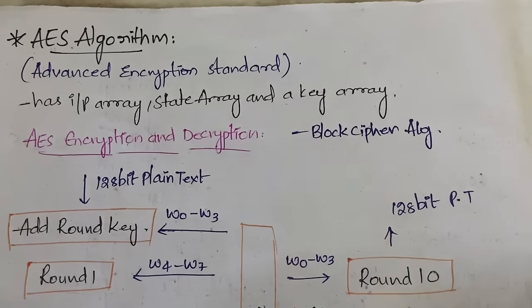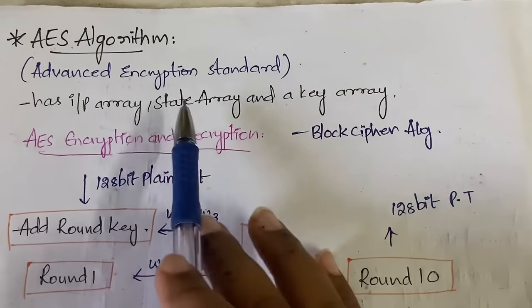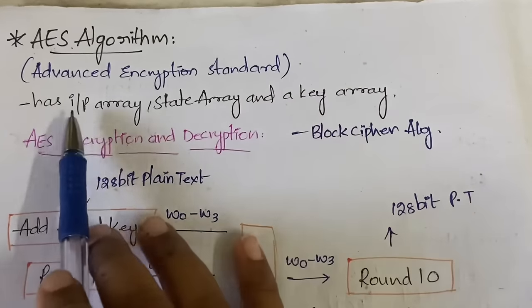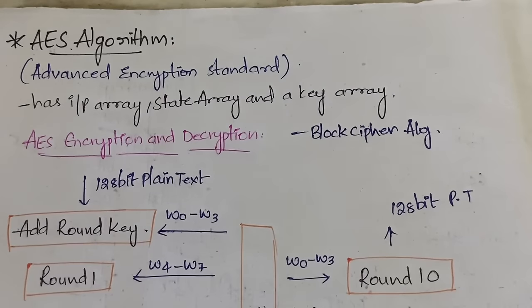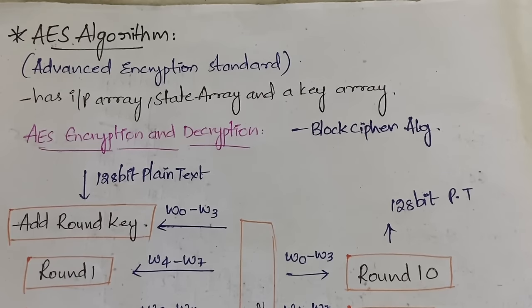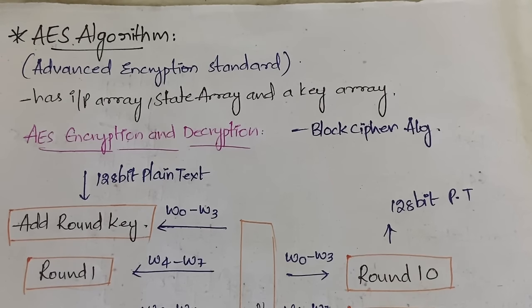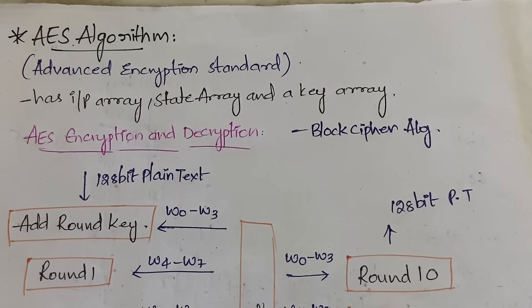Let's get started. AES has an input array, a state array, and a key array. I'll explain what each of those are and show you a diagram as well. As we already know, AES is a block cipher algorithm. Under block cipher we have DES, AES, Blowfish, IDEA, and RC5 algorithm and so on. In this video we are going to learn about AES, in the next video about Blowfish, then RC5, then IDEA, and so on.